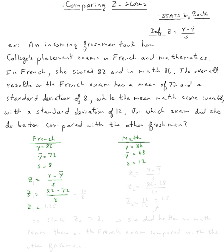Use your calculator. That would be 82 minus 72, 10 over 8, and I think that's 1.25.